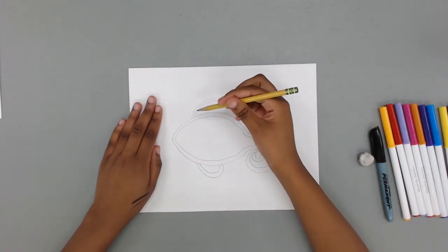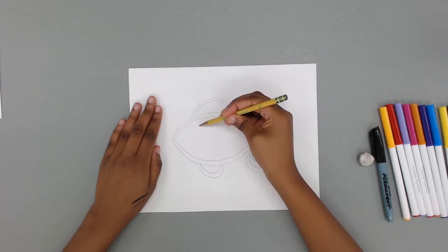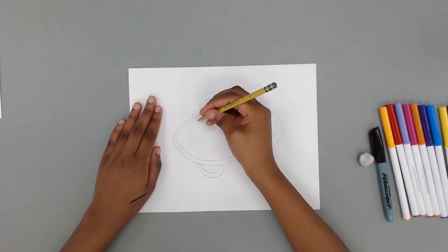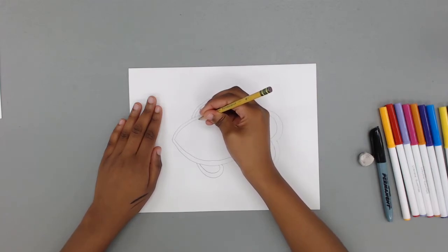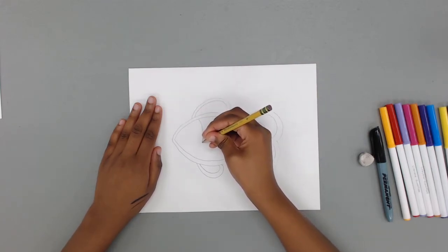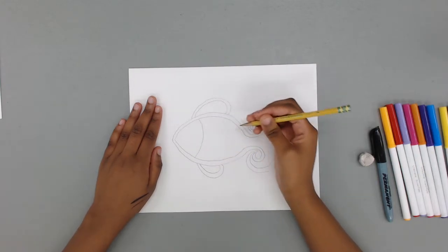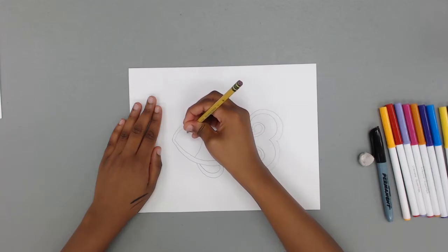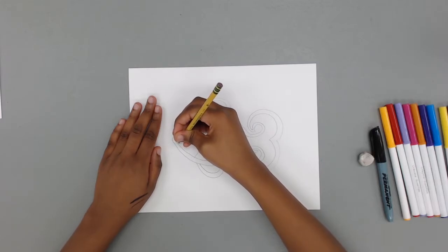Next we're going to use a curved line in the inside of our fish to divide the face with the rest of the body. Now draw the face with your fish. Draw some eyes and draw a nice smile.